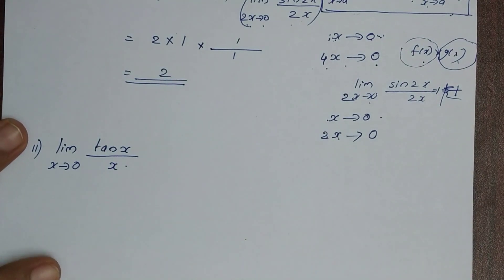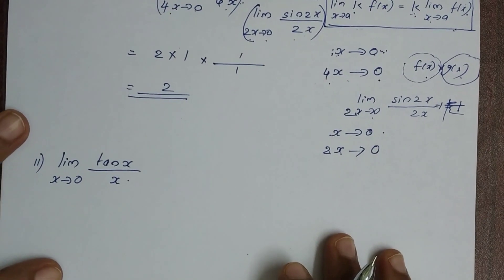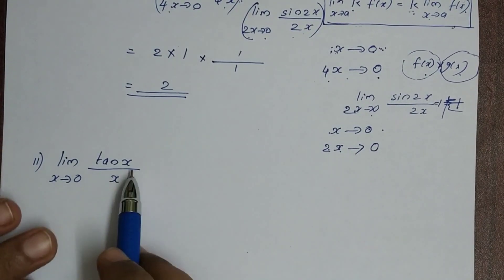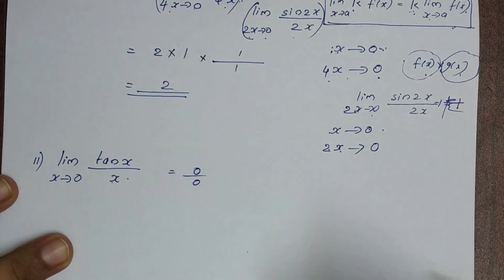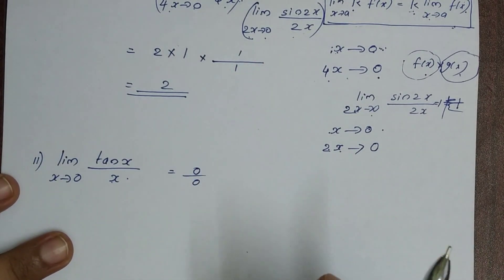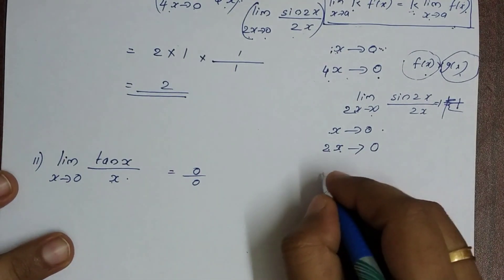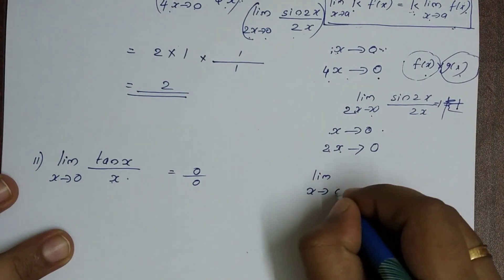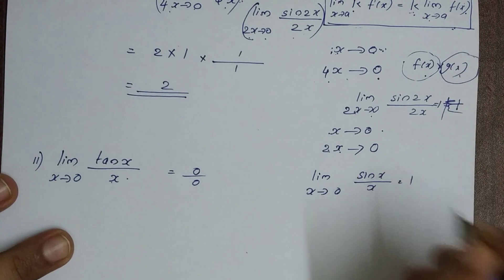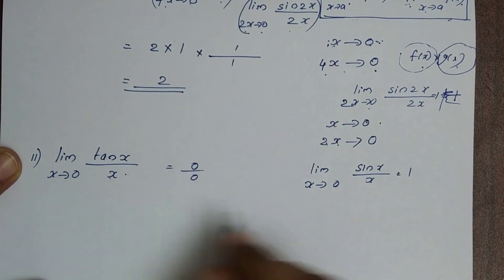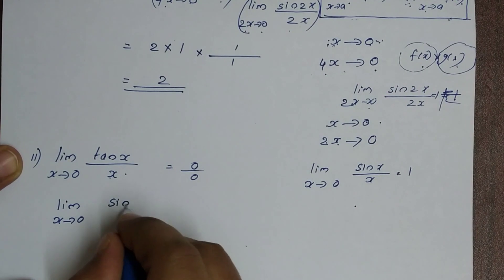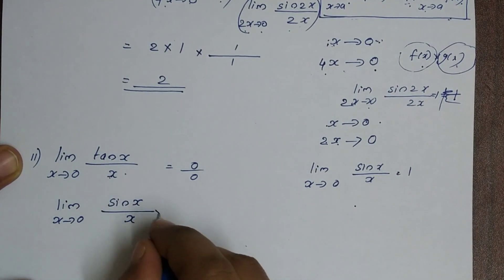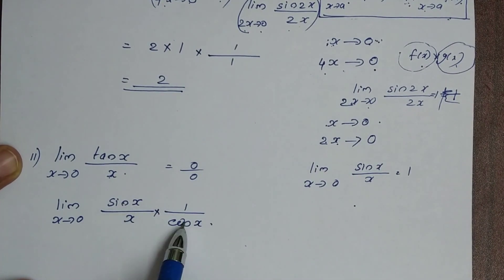The next problem is limit x tends to 0, tan x by x. First we substitute x equals 0: 0 times 0 equals 0, so this is in the form 0 by 0. Now we will rewrite tan x as sin x by cos x.